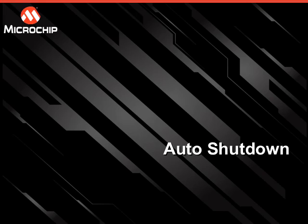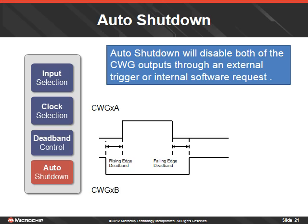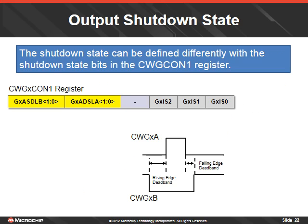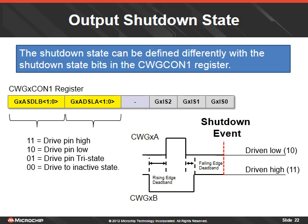Auto shutdown will disable both of the CWG outputs through an external trigger or internal software request. When the shutdown event occurs, both outputs will change to the state defined in the CWG control 1 register. The shutdown state can be defined differently with the shutdown state bits in the CWG control 1 register. Four choices exist for each output: the output can be forced high, low, or tri-stated on shutdown independent of the polarity setting, or it can be driven to its normal inactive state.